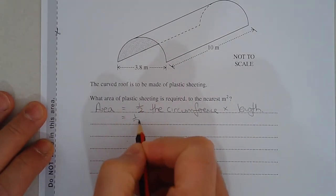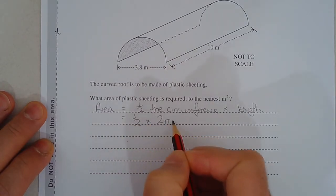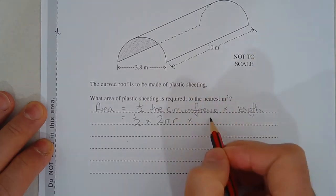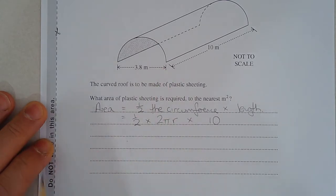So what's half the circumference of the circle? It's going to be 2πr multiplied by the length which happens to be 10 meters. Now we're given the diameter of this circle as 3.8 meters. We don't work with the diameter, we work with the radius.